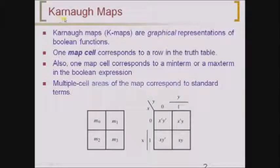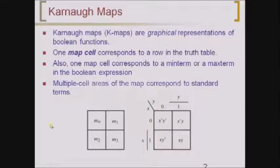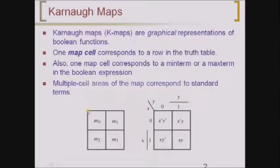The graphical method we are going to use is Karnaugh maps, also called K-maps. Karnaugh maps are graphical representations of Boolean functions. With the help of these maps we are going to represent any kind of Boolean function graphically. One map cell corresponds to a row in the truth table. Also, one map cell corresponds to a minterm or a maxterm in the Boolean expression. Each and every cell inside the map will be representing a row in the truth table, or a minterm or maxterm in the Boolean expression.